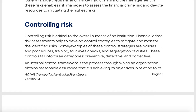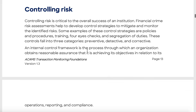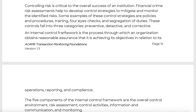Control strategies include policies, procedures, training, and four-eyes checks — where someone else reviews your work. There could be a question on four-eyes checks and segregation of duties. The three categories of controls are preventative, detective, and corrective. There's also the internal control framework, which is important to know about — though you typically won't be implementing it yourself if you're in client onboarding or transaction monitoring, as it's more of an audit function.